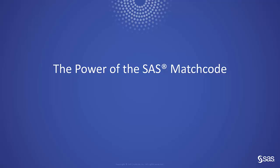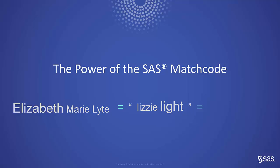Have you ever wondered how you can match your data when people use different abbreviations and nicknames in your data fields? For example, you may want to easily match your Elizabeth Marie Light, Lizzy Light, and Beth M. Light sales records to get a complete picture of their purchase history with your company. Keep watching and we will explore the power of the SAS match code for fuzzy matching your data.